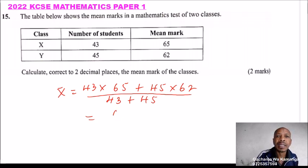Two marks. So this is 63.4659. But because we are taught to two decimal places, we say it is 63.47.